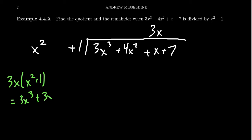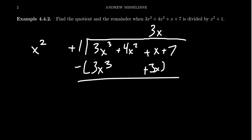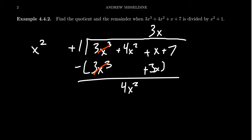We record 3x cubed and 3x down below, keeping the gap the same way — I want to line up like terms in the same column. The 3x cubed terms cancel out; you should always have the leading terms cancel if you chose the right quotient. Then you get a 4x squared that has nothing to cancel with, giving us 4x squared. The next term is x minus 3x, which is negative 2x.